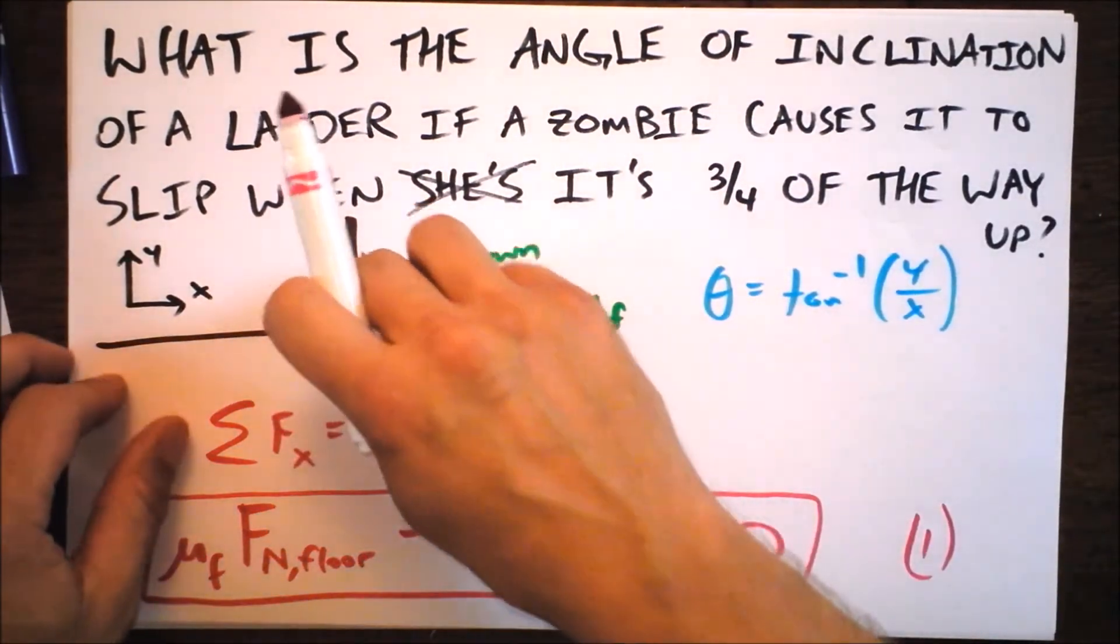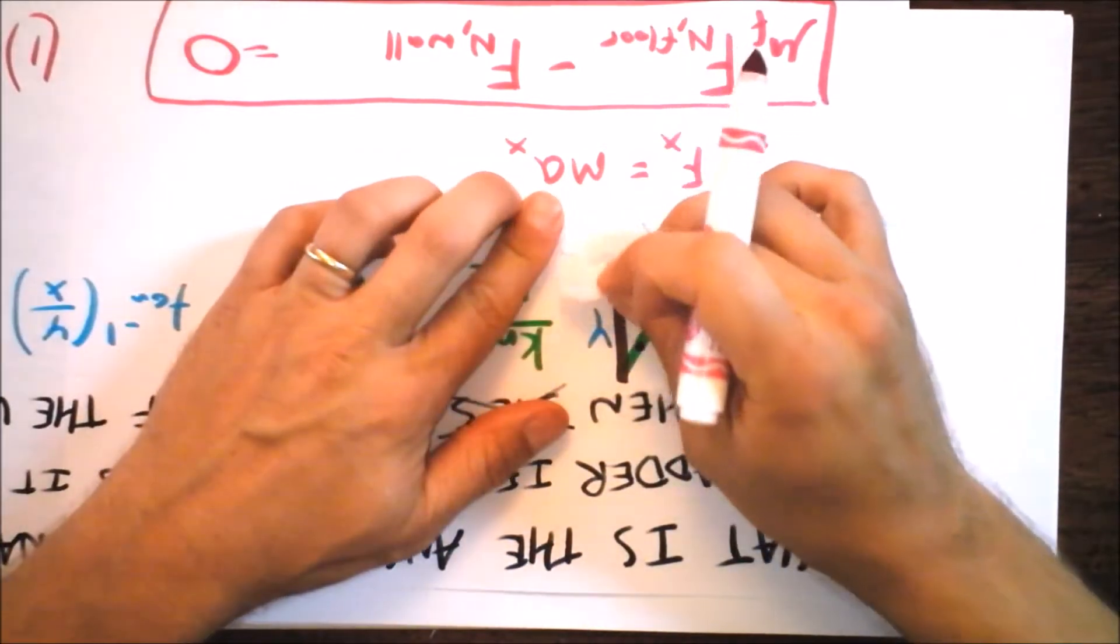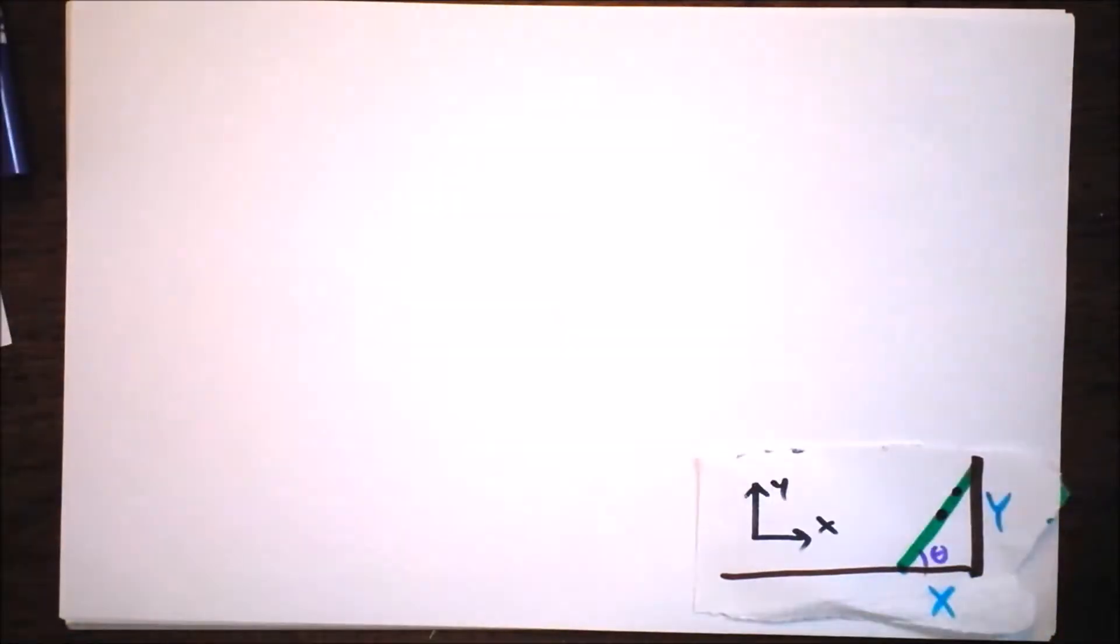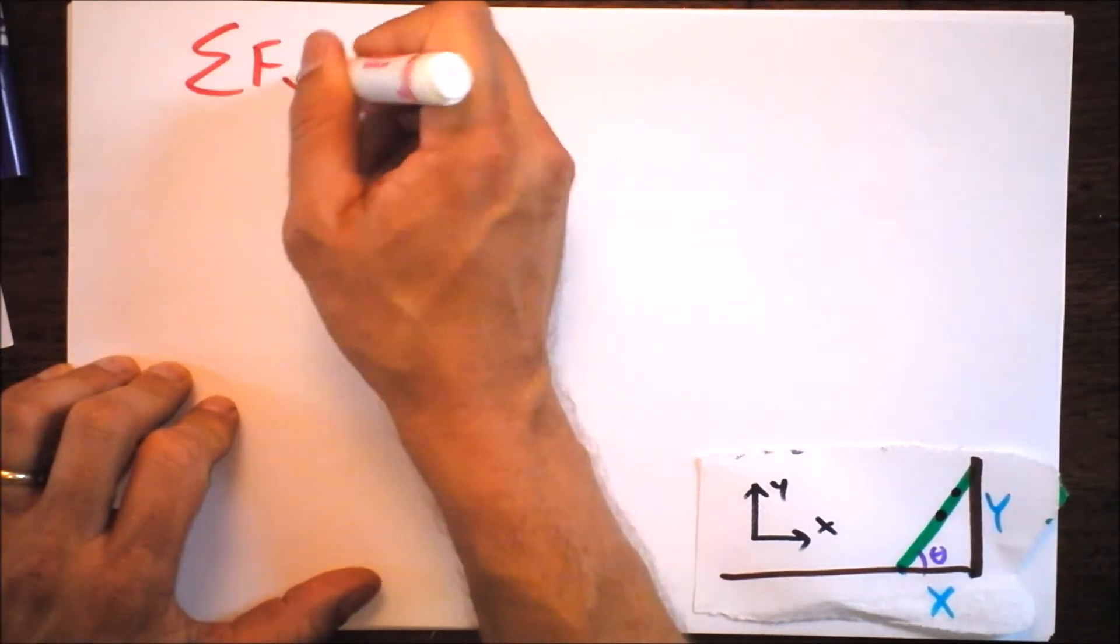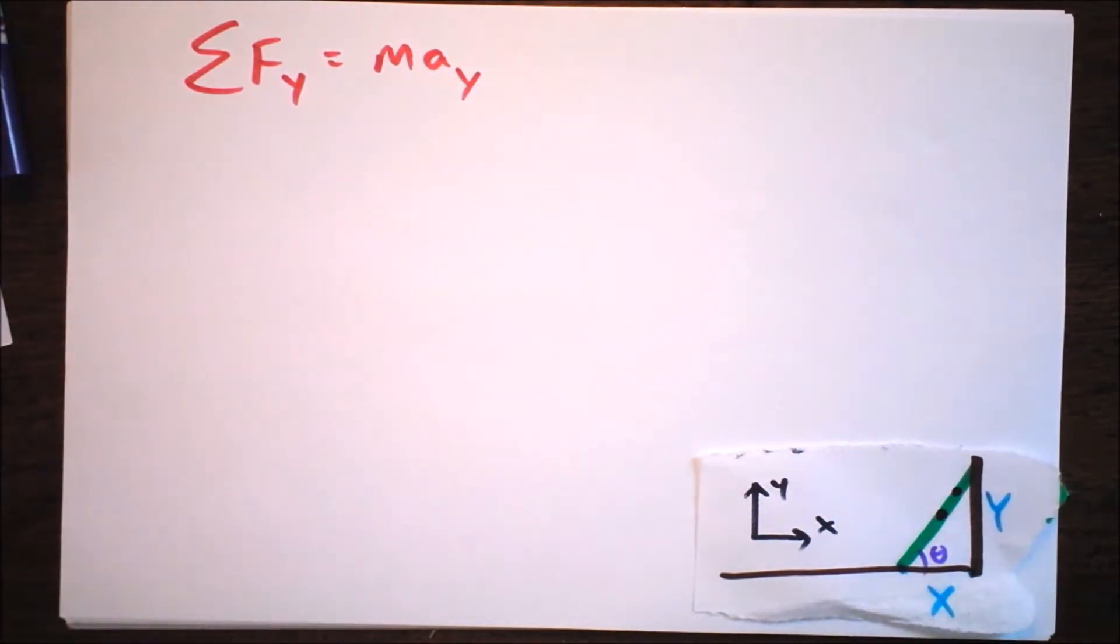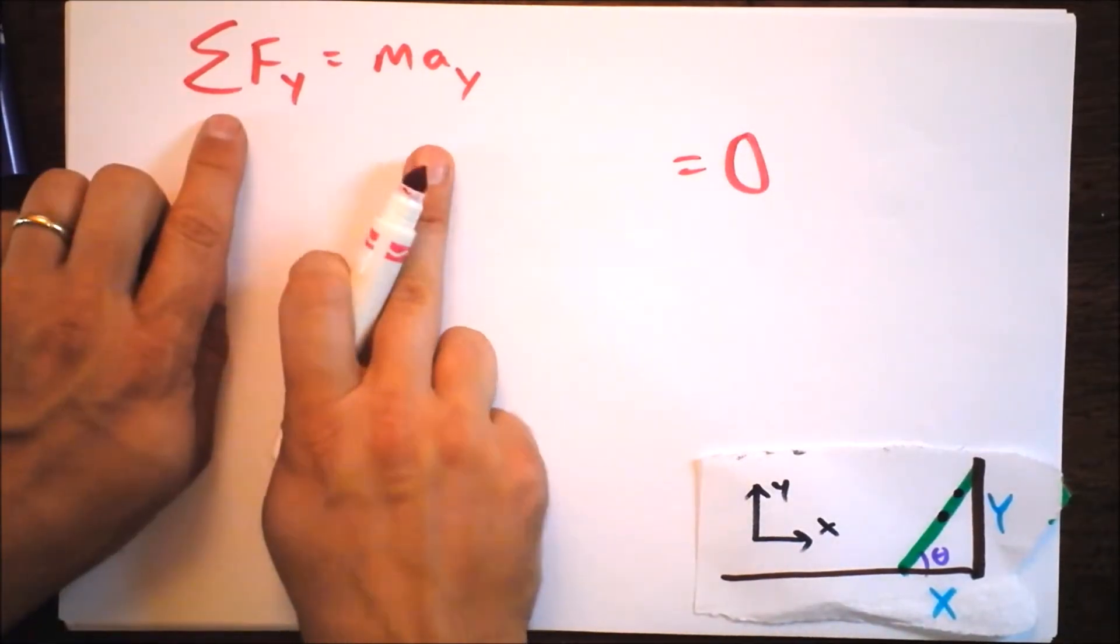My next discussion is going to be about the net force in the Y direction. The net force in the Y direction is the mass times the acceleration in the Y direction. But again, it's a statics problem, so we have something equals zero. We're looking at the forces in the Y direction.